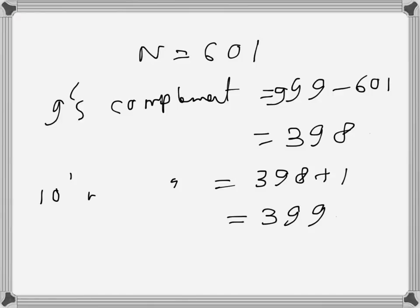For a single-digit number, if N is 5, the 9's complement is 9 minus 5, which equals 4. So 4 is the 9's complement of 5.